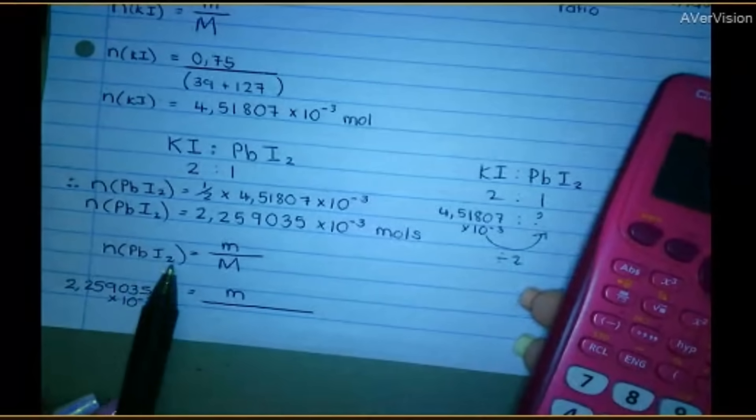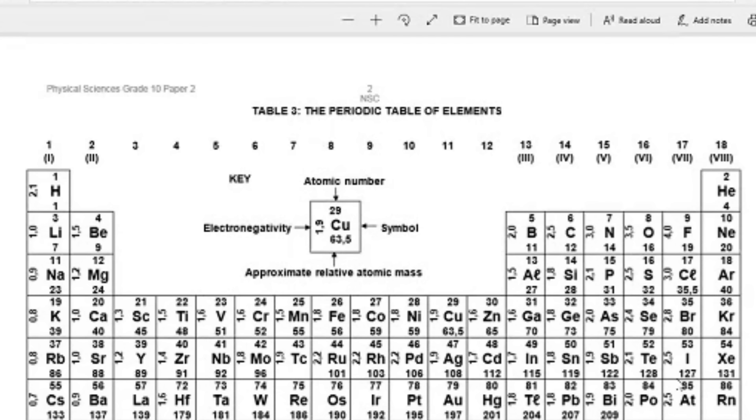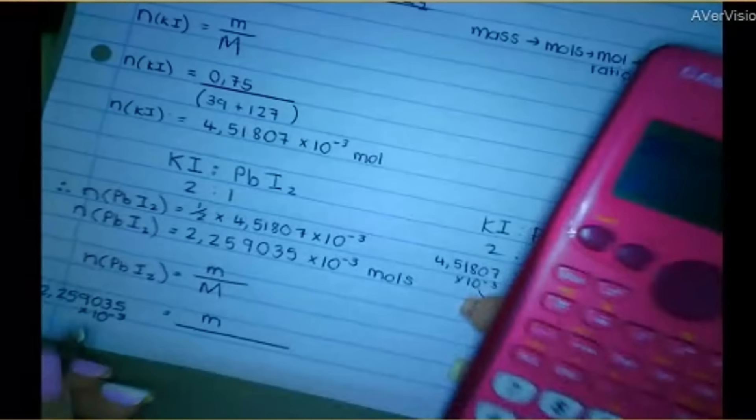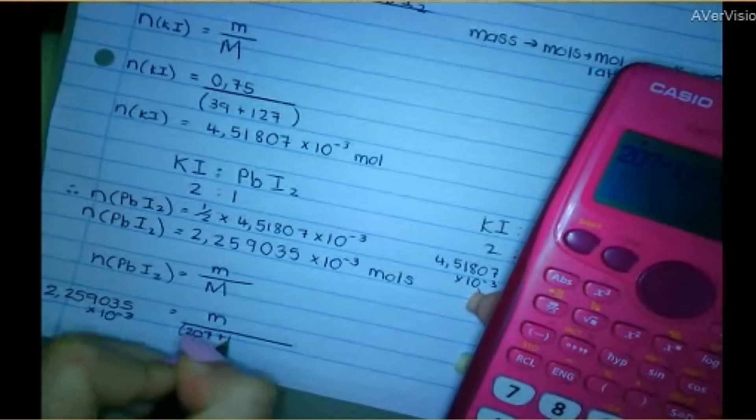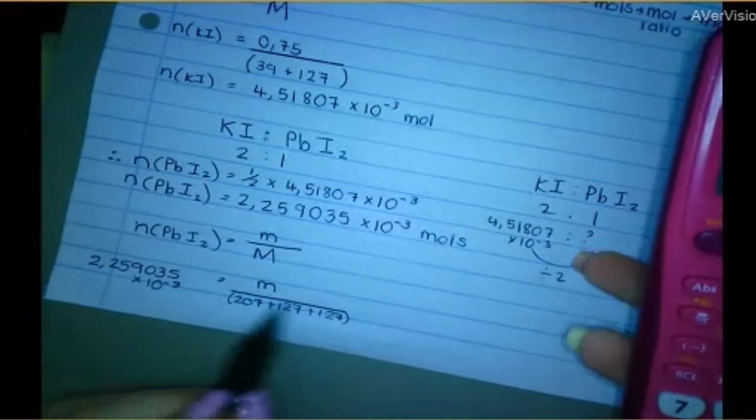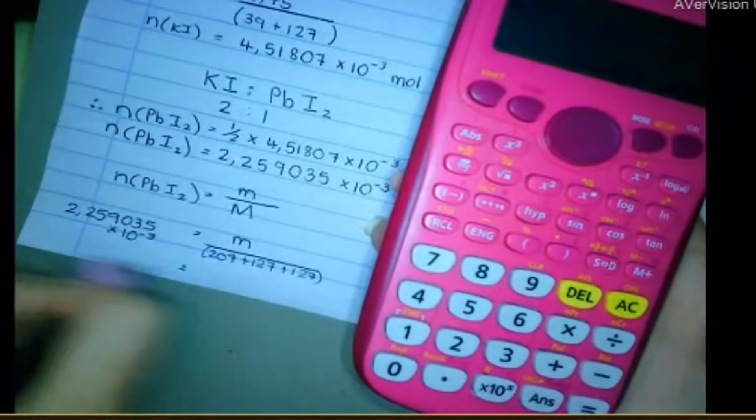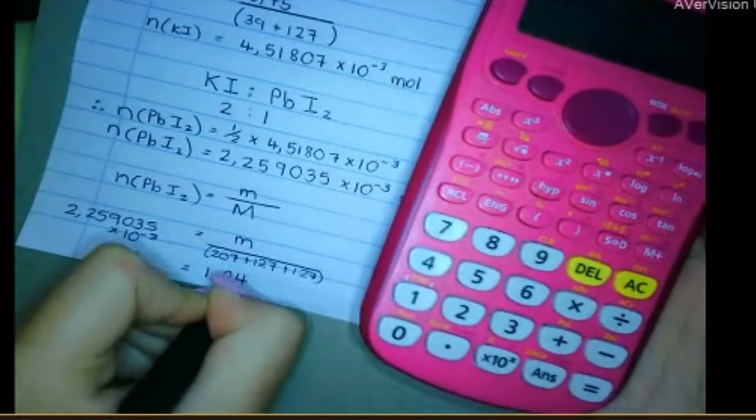It's lead and it's I2. So I've got 461 as my molar mass. So 207 plus 127 plus 127. So that just gives me 461. Then I multiply that by that. And I get mass is equal to 1.04 grams.